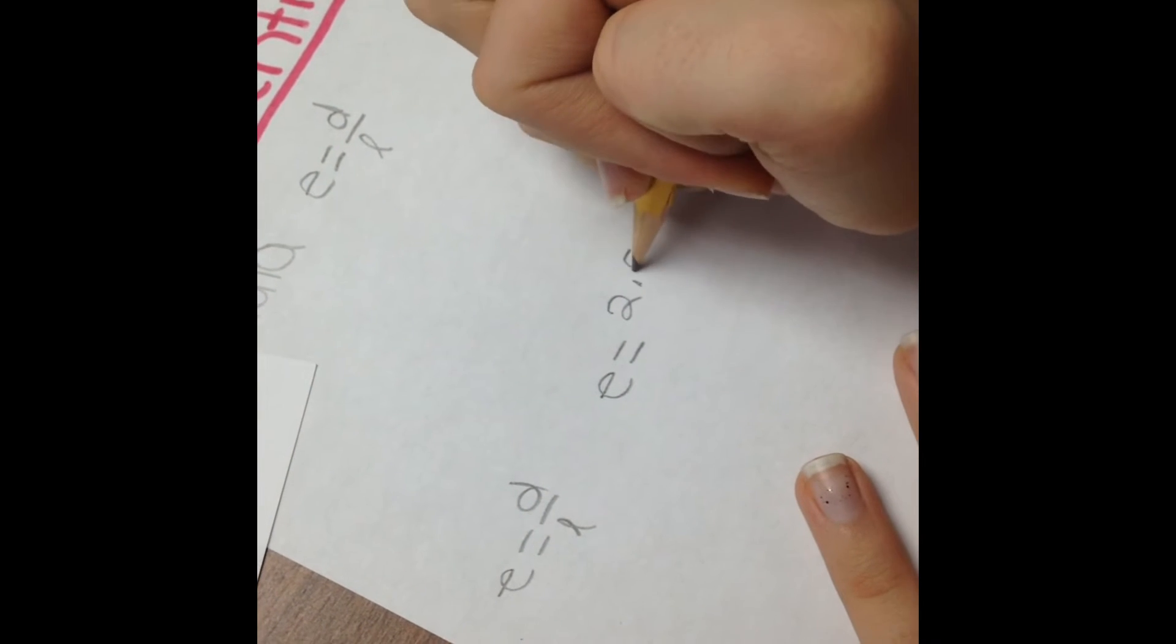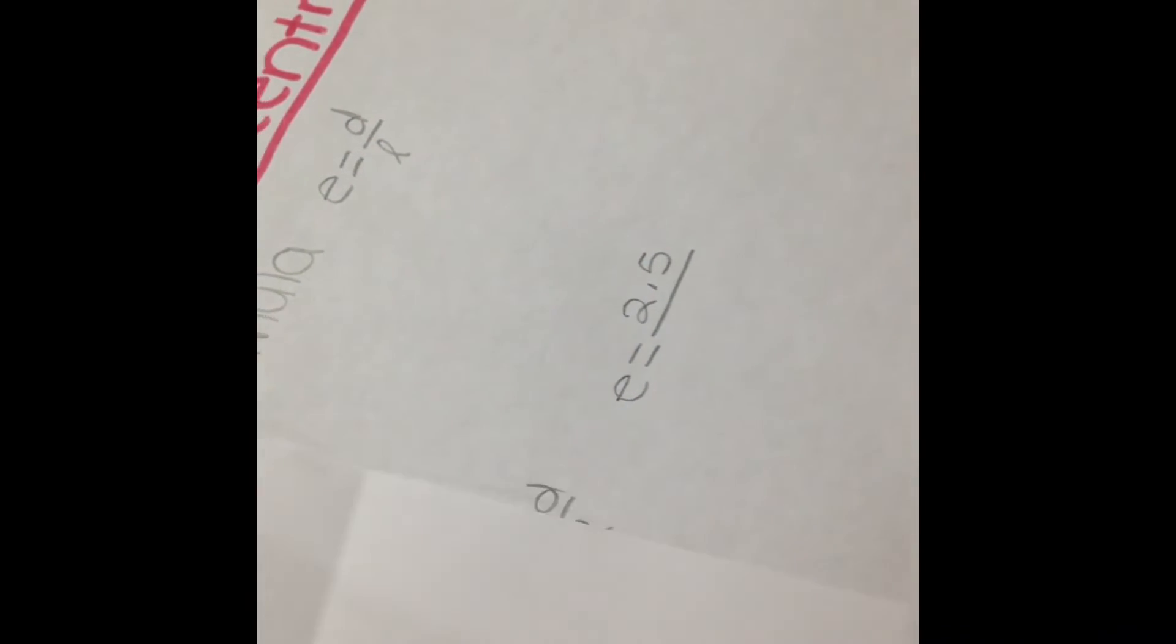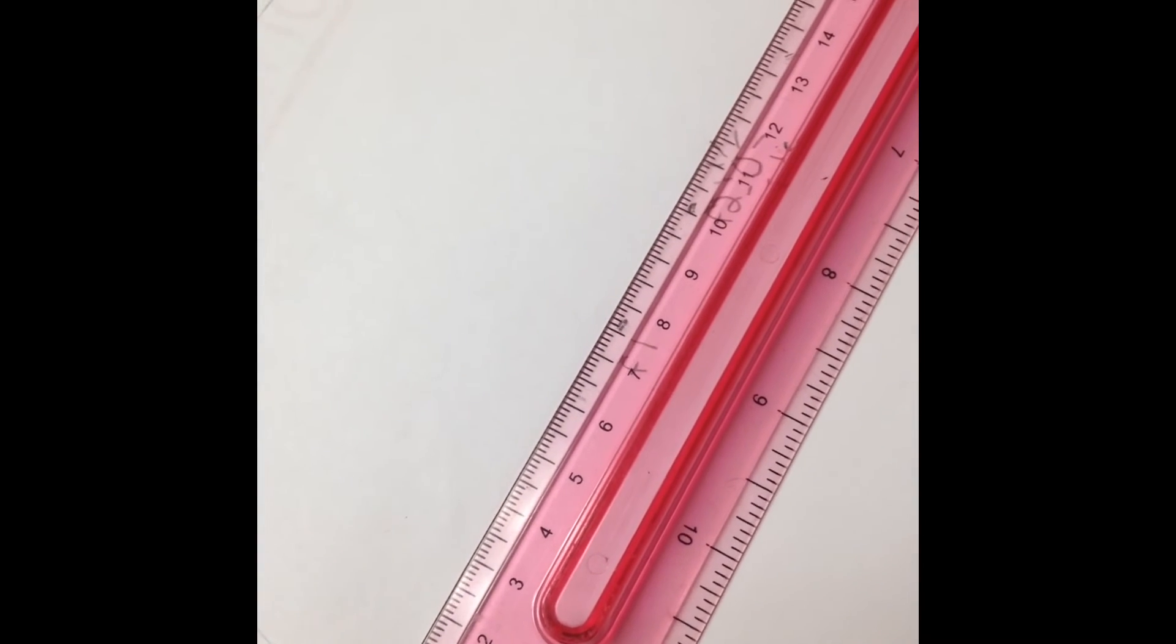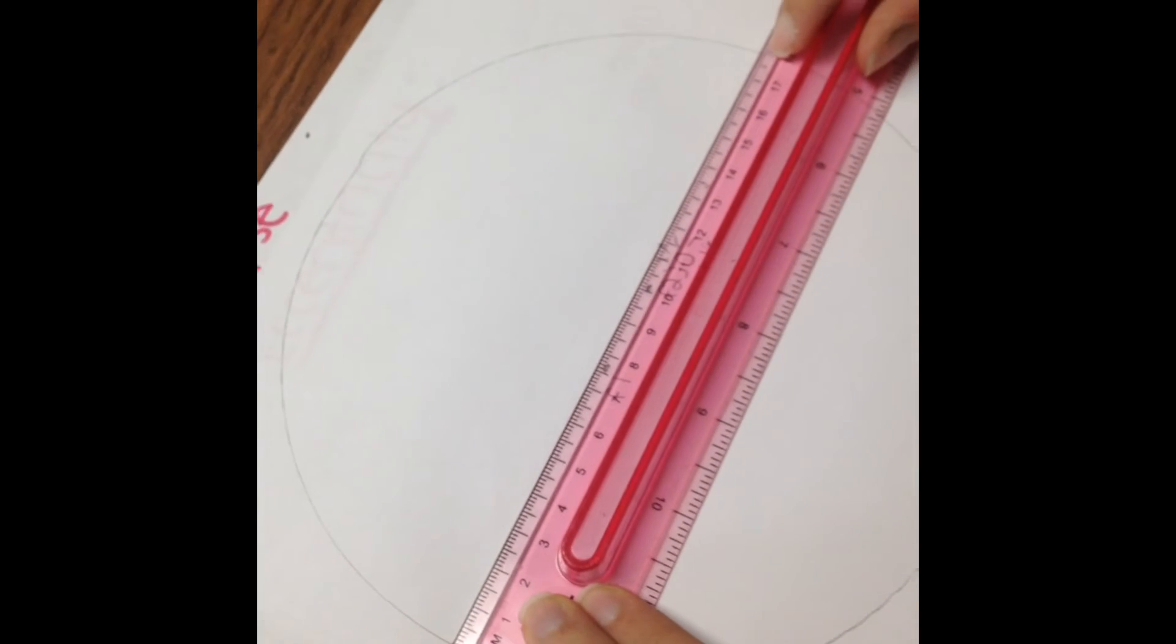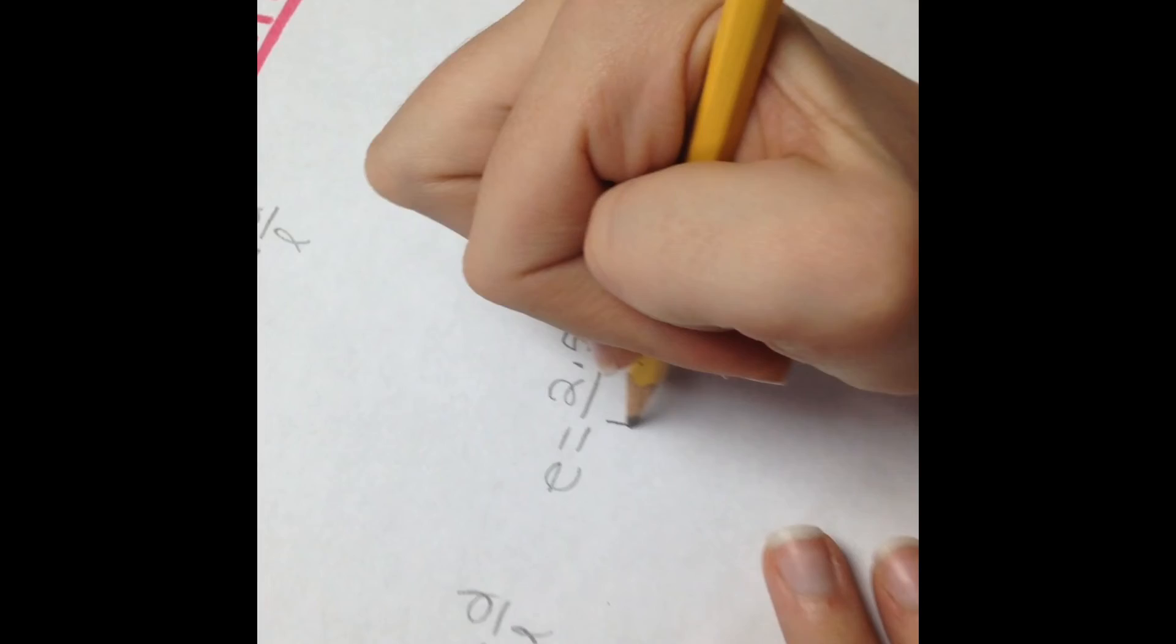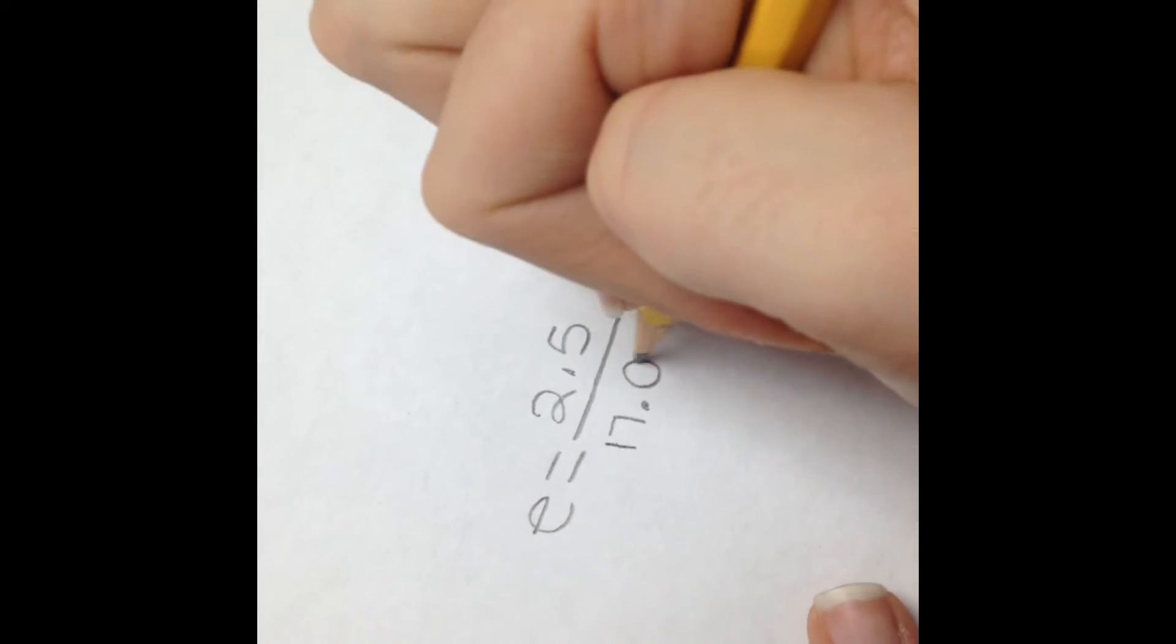Once you put 2.5 down for our distance we are going to find our length. Our length is going to be the length of the major axis in the ellipse. The length is going to be 17.9.